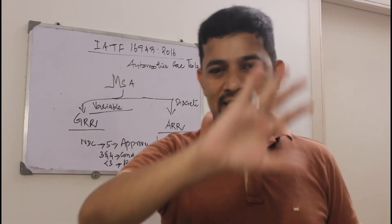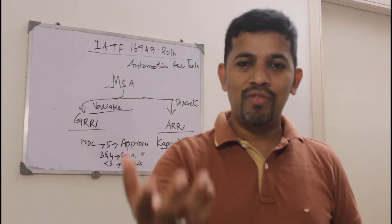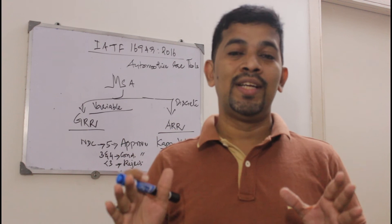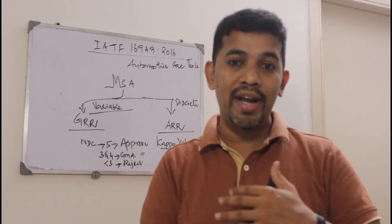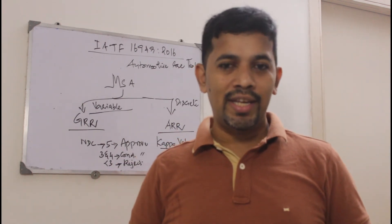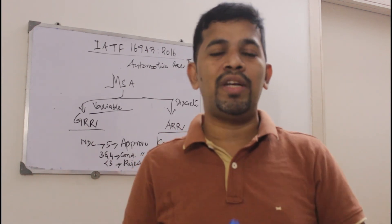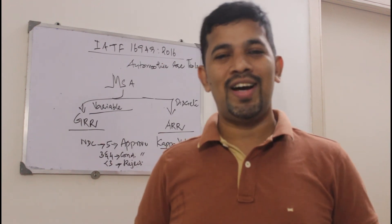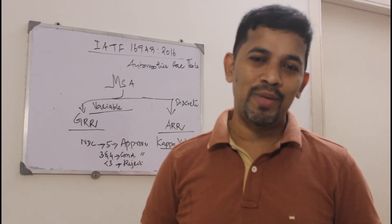To summarize, MSA is a big topic and what I've covered is the gist. MSA has two branches: GRR and Attribute Agreement Analysis. GRR outputs the NDC value; Attribute Agreement Analysis outputs the kappa value. When doing GRR, randomization is critical and appraiser identity must be hidden to avoid bias. Similarly in Attribute Agreement Analysis, sample identification should be hidden so appraisers give unbiased assessments each time. The next video will cover SPC — Statistical Process Control. Please like, share, and subscribe to the channel.